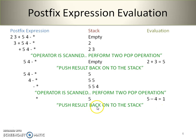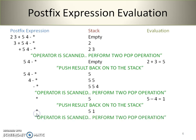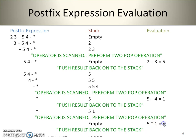The stack now holds two values. The next scanned character is the multiplication operator. We perform two consecutive pop operations: 1 is popped and becomes the second operand, 5 is popped and becomes the first operand. 5 multiplied by 1 gives a result of 5. We push the result back onto the stack, and a single value remains. The result of this postfix expression evaluation is 5.